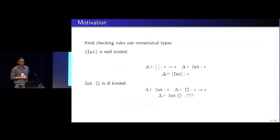So let's see how the kinding rule works. It's pretty simple. List is a kind function, it goes from star to star, int is of type star, so list of integers is star. So all good.